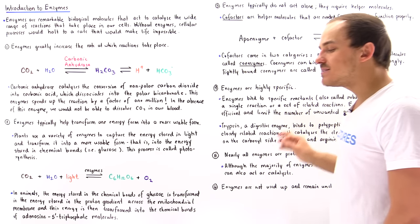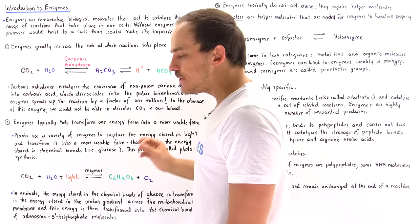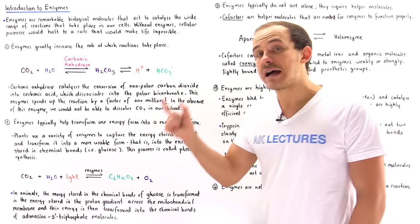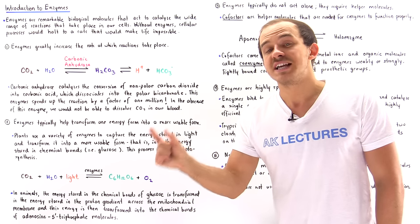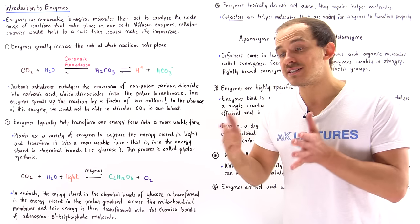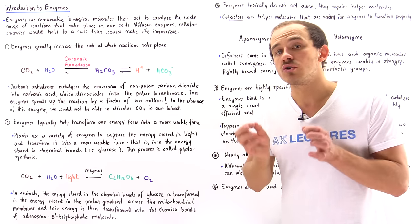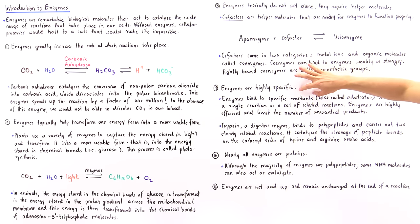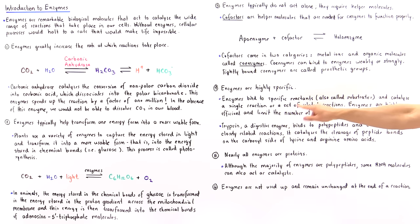Number four, enzymes are extremely efficient and extremely specific molecules. What that means is enzymes only bind to specific substrate molecules and they carry out either a single reaction or a set of reactions that are closely related to one another. So enzymes bind to specific reactants, also called substrates, and catalyze a single reaction or a set of related reactions, and enzymes are highly efficient and limit the number of unwanted products.